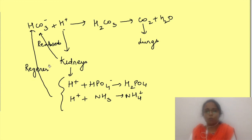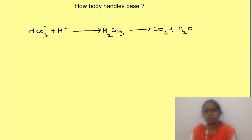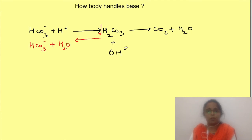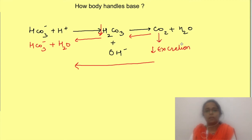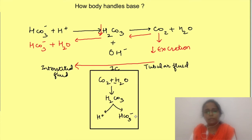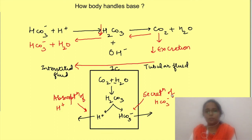If there is excessive loss of acids or addition of bases, the same mechanisms act in reverse. Buffers combine with H2CO3 and bicarbonate ions, and since H2CO3 decreases, the reaction shifts toward CO2 combining with water to form carbonic acid — leading to decreased excretion of CO2 from the lungs. The kidneys decrease H+ secretion and may start secreting bicarbonate ions instead, via a different type of intercalated cell in which bicarbonate moves into the tubular fluid and H+ moves to the interstitial side. So the body is well equipped to handle pH changes in either direction.